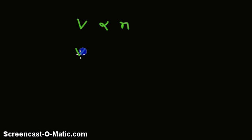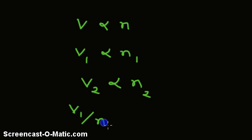Therefore, we can write V1 is directly proportional to N1, the number of initial moles. Volume 2, the final volume, is also directly proportional to the final number of moles. Simplifying further, we can write V1 divided by N1 equals V2 divided by N2.